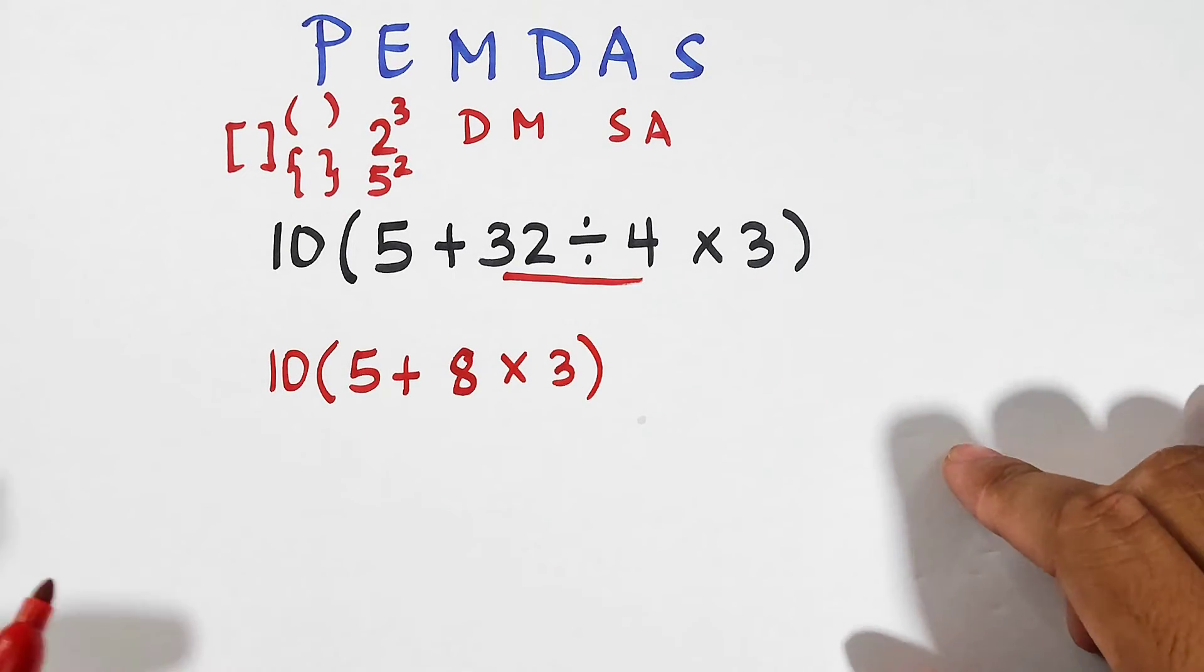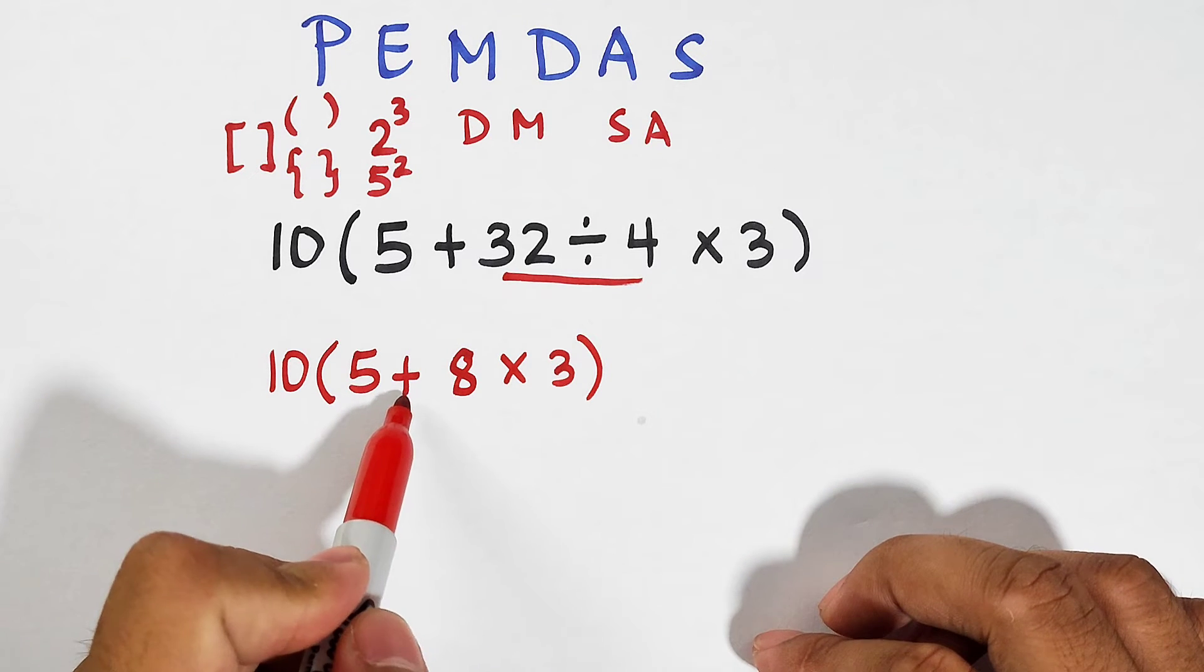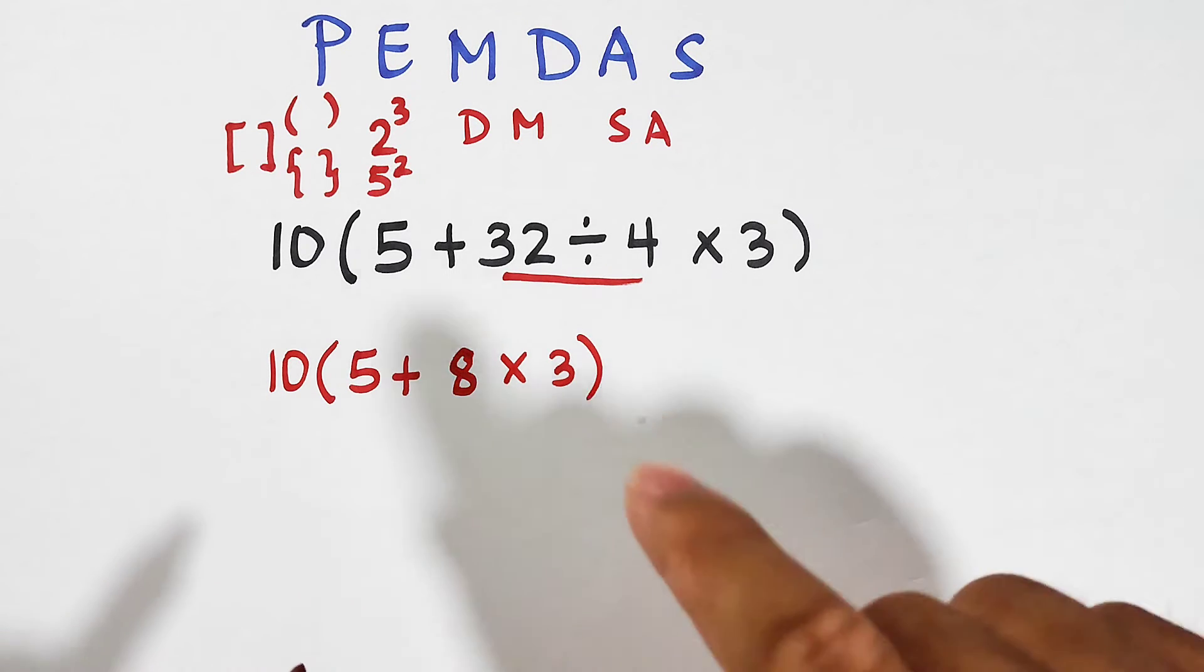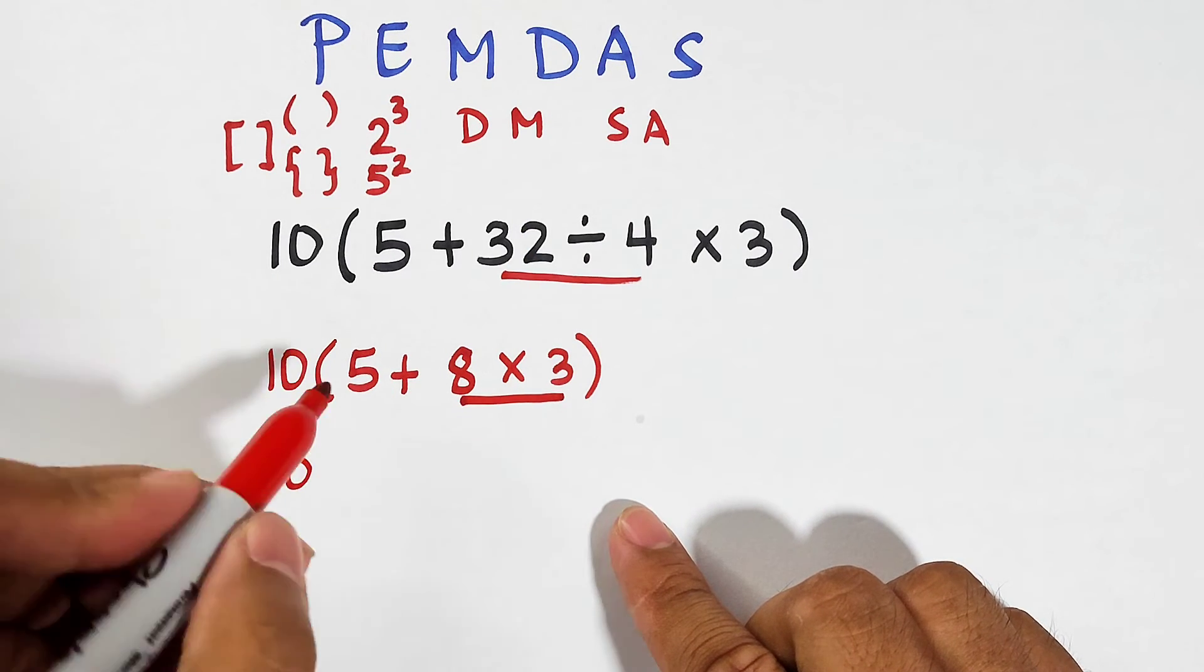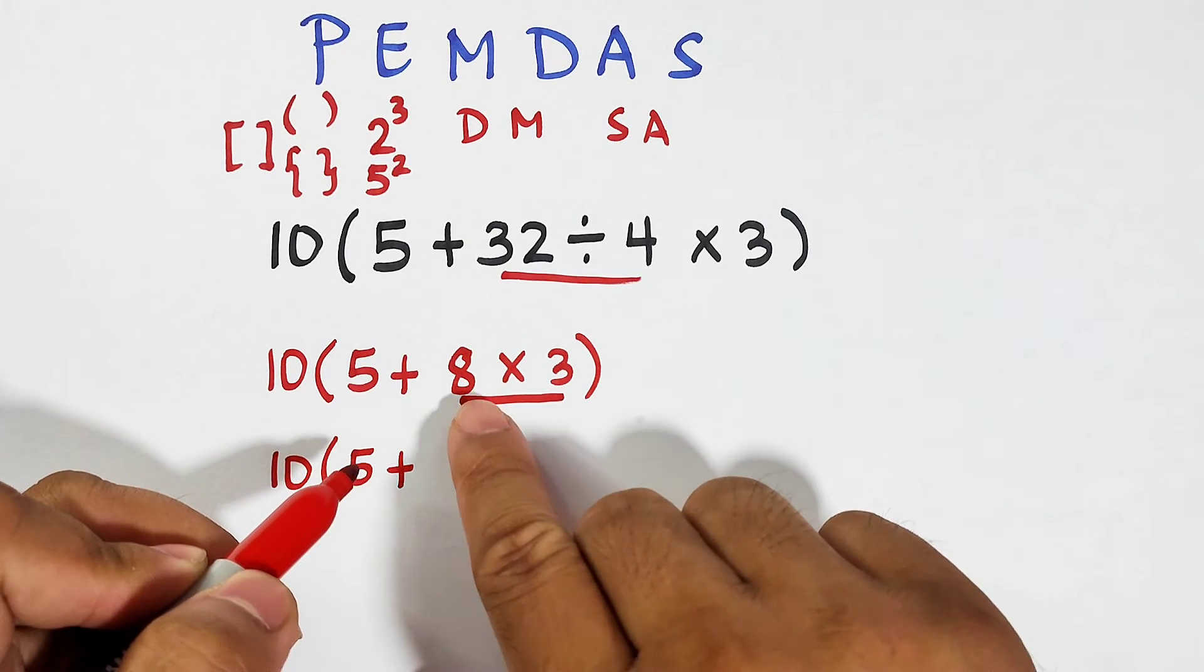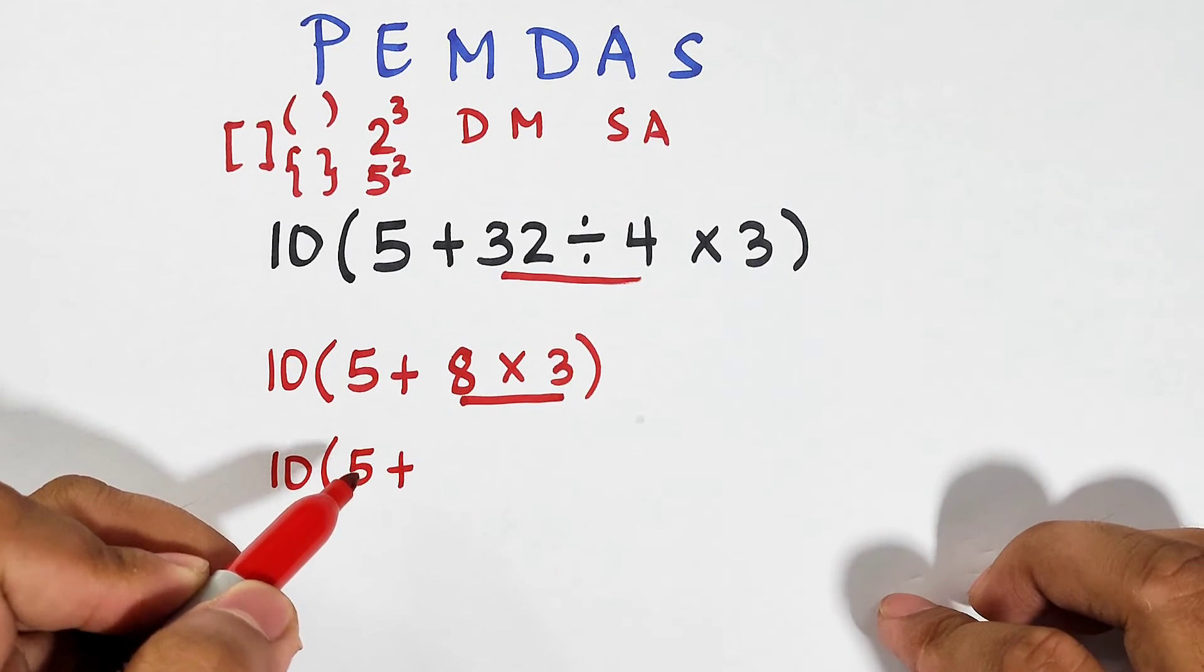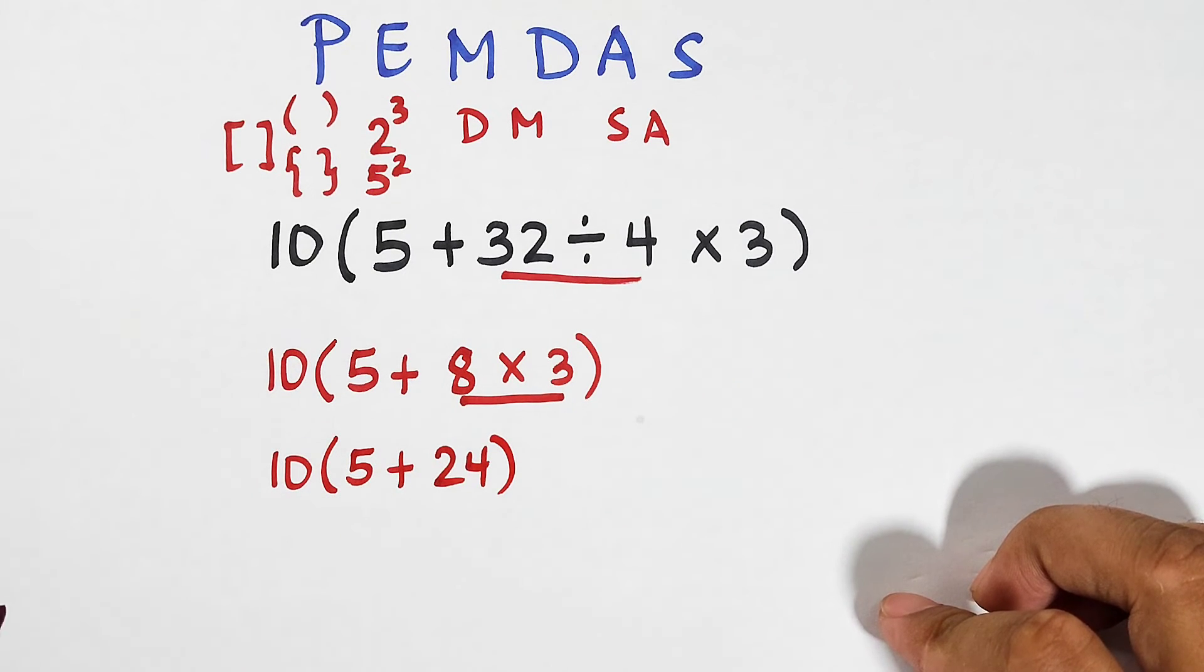Now the two operations inside the parentheses are plus and multiply. Again, we will go with the multiplication. Copy 10, and then 5 plus 8 times 3 that is equal to 24.